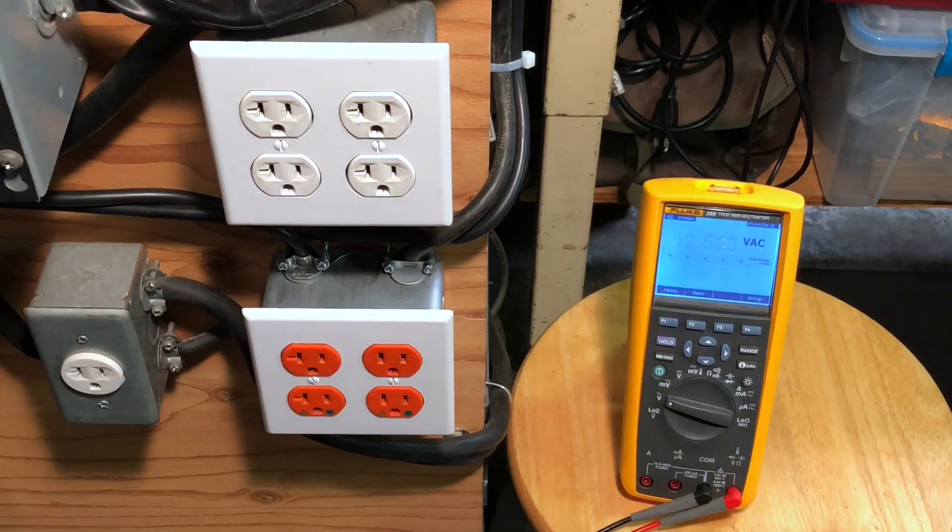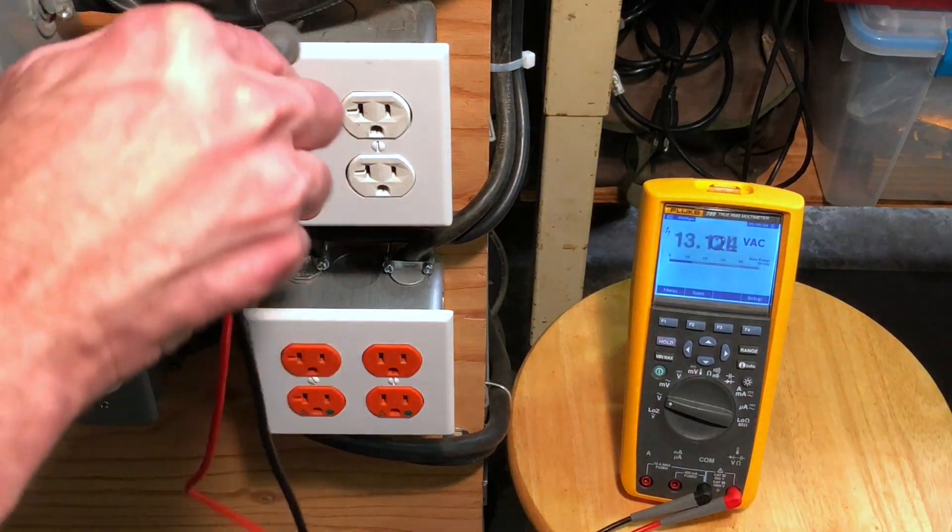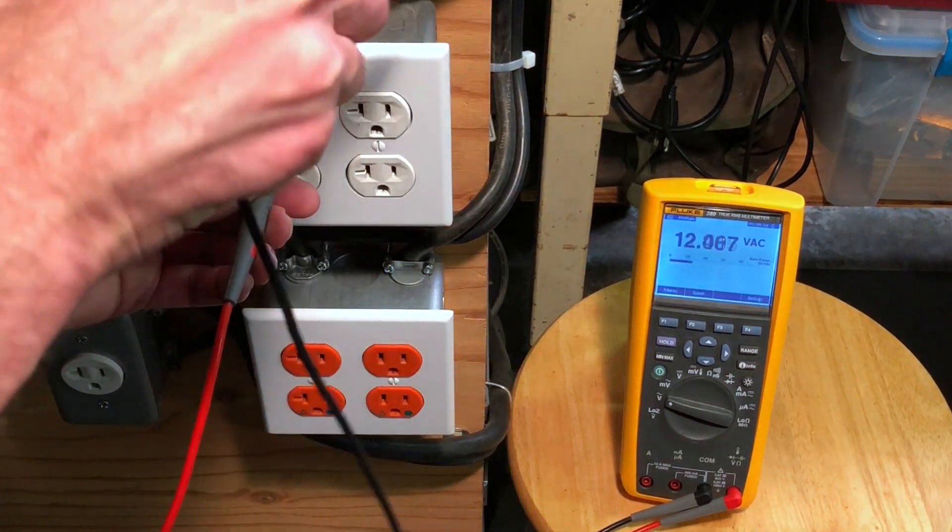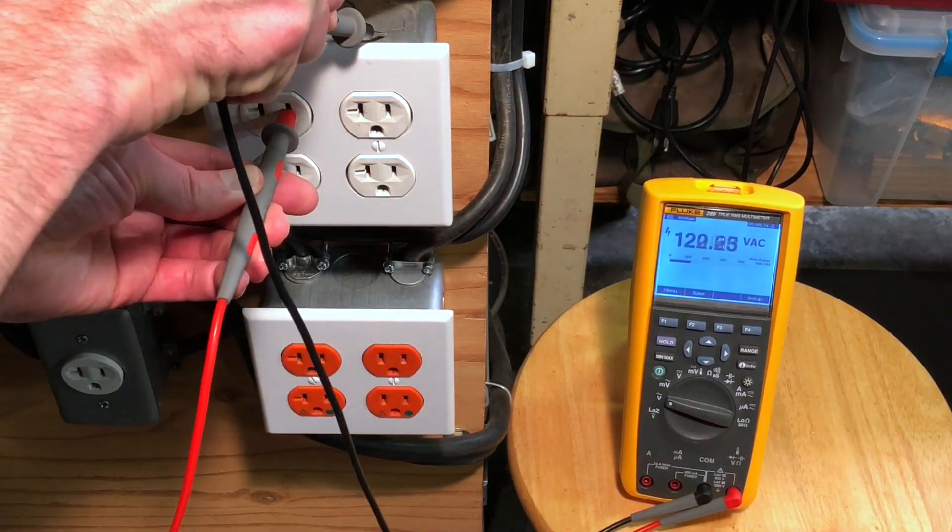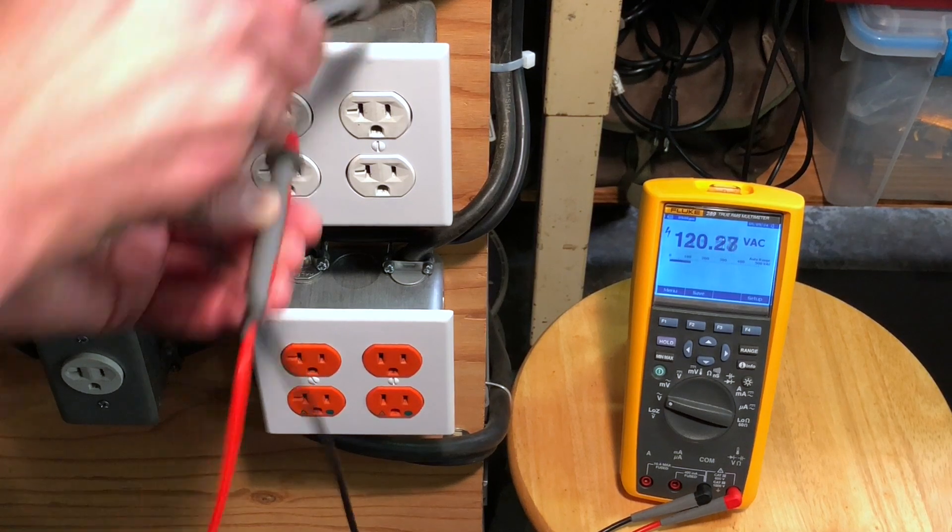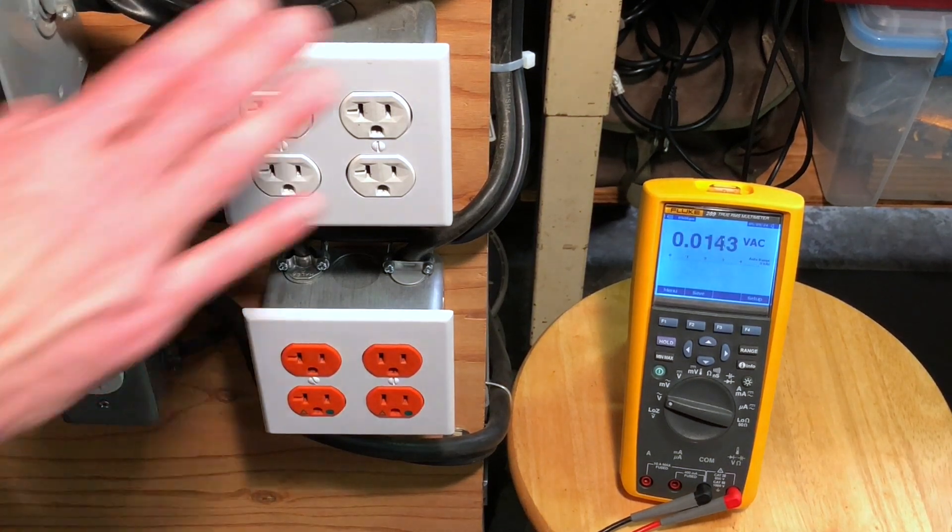If you go from the hot to earth ground, 120 volts, and that is correct. That's where a shock hazard can exist because if you get between that hot connection and you are grounded by your feet on the floor, there you have a severe electrical shock. That's where there's definitely a hazard. Always keep that in mind.